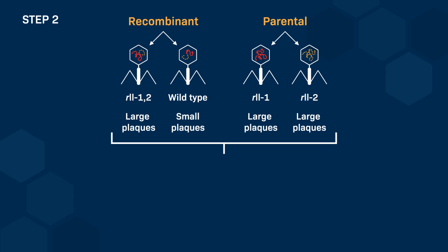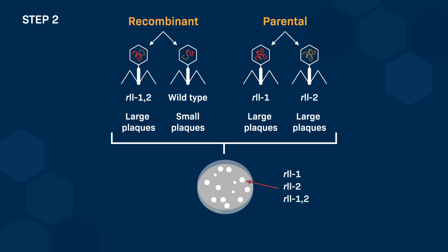The second step for this recombination assay is the analysis by a plaque assay of the phenotype of the progeny issued from the first step. The supernatant collected at the end of step 1 is plated onto bacteria. Bacteria are, this time, in excess compared to bacteriophages, and the bacteria-to-bacteriophage ratio is such that a bacterium cannot be infected by more than one bacteriophage. So, no recombination should occur at this step. On the plate of bacteria, large plaques could come from three different bacteriophages: the single mutants R21 and R22, as well as the double mutant R212. Single and double lysis mutants produce large plaques of the same size.